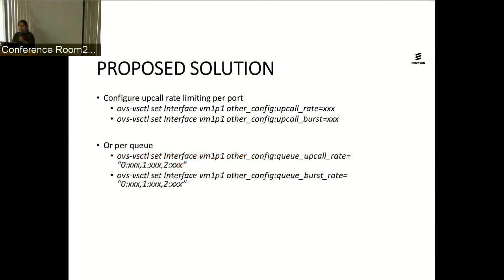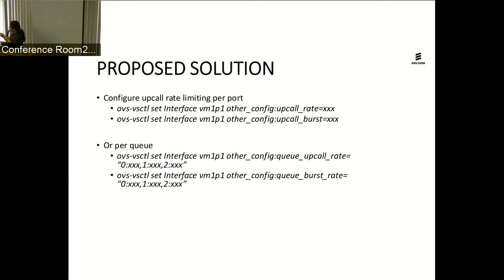There is a small problem with the proposed solution. Even though it works well for limiting denial-of-service for already-learned flows, it is still a problem for flows that have not been learned but genuinely want an upcall — they might be blocked by other vHost ports or queues polled by that PMD thread. So we want to introduce rate limiting on a per-port or per-queue basis. The first command instantiates a policer at the port or interface level, and the second allows you to explicitly set the rate on a per-queue basis for queues expected to have more upcalls.